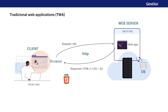By default, the browser shows the HTML elements with a native style — that is, the buttons, text, boxes, and other objects are seen according to the operating system and the browser being used.